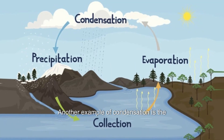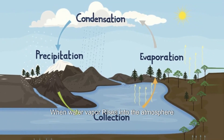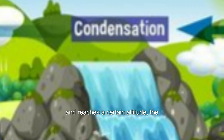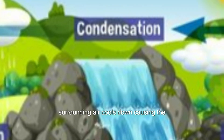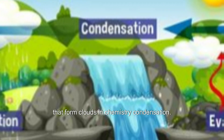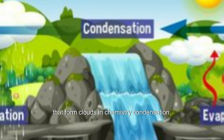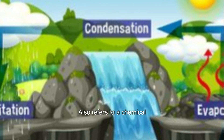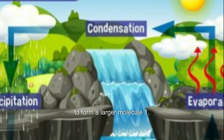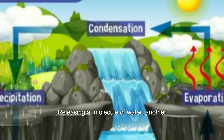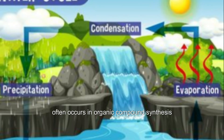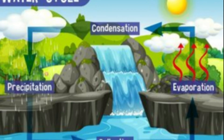Another example of condensation is the formation of clouds in the atmosphere. When water vapor rises into the atmosphere and reaches a certain altitude, the surrounding air cools down, causing the water vapor to condense into tiny droplets that form clouds. In chemistry, condensation also refers to a chemical reaction where two molecules or atoms react together to form a larger molecule, while releasing a molecule of water or another compound as a byproduct. This process often occurs in organic compound synthesis in chemical laboratories.